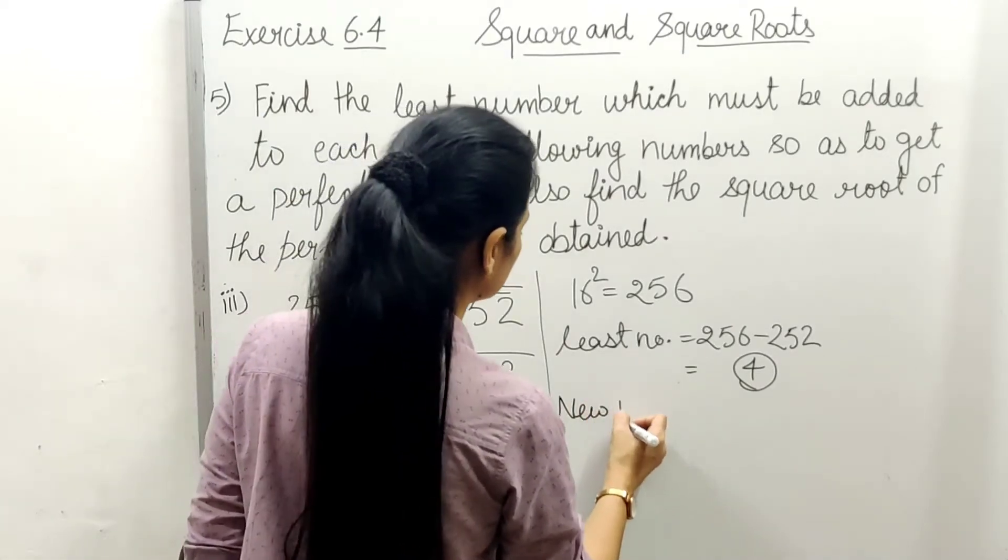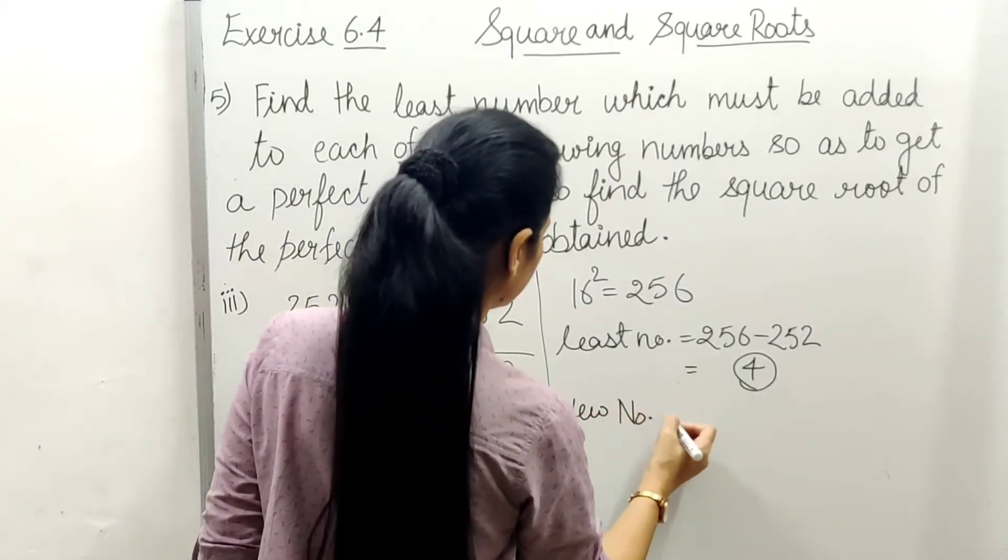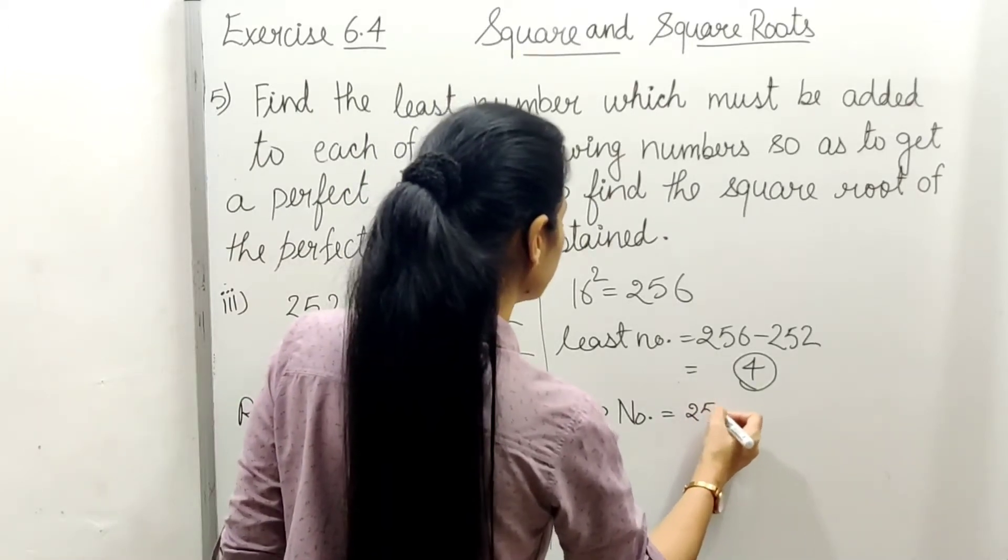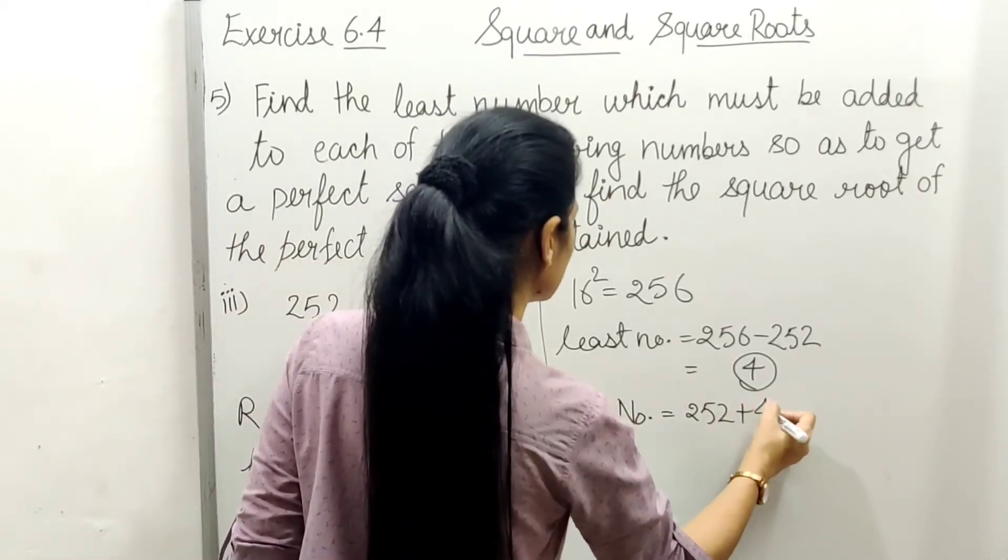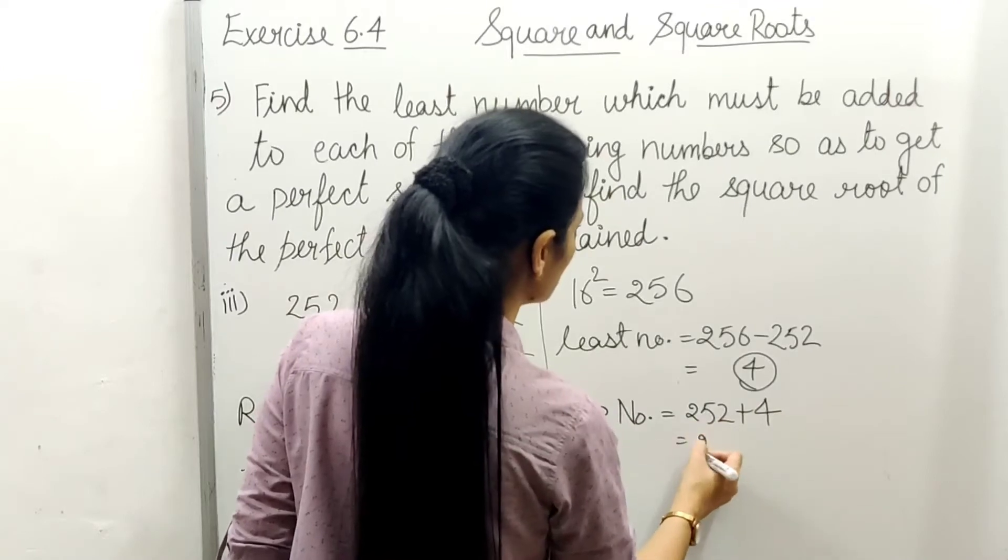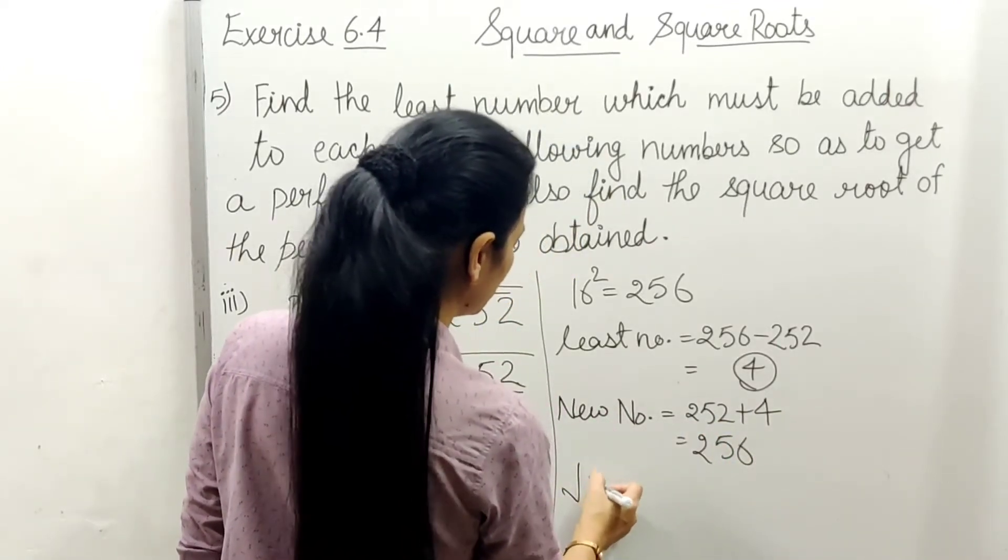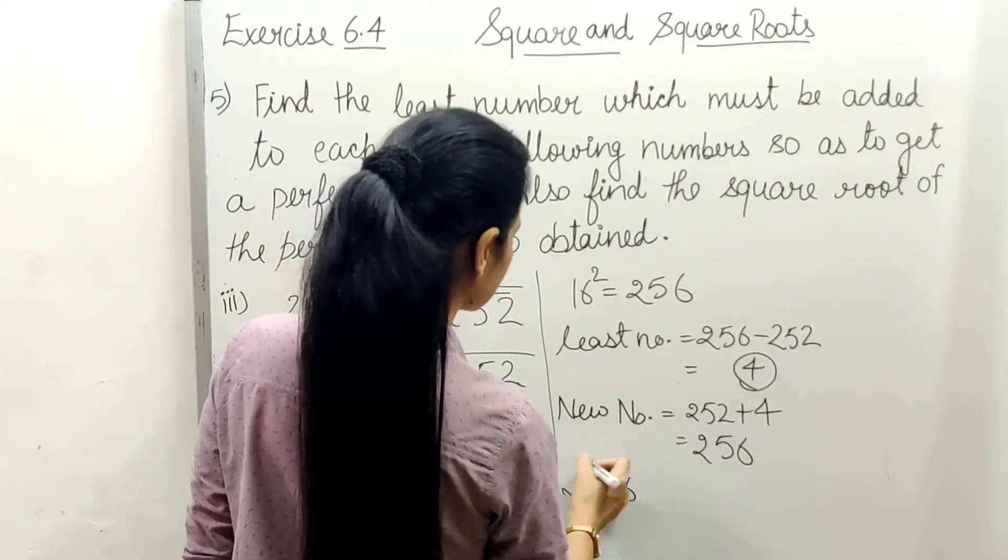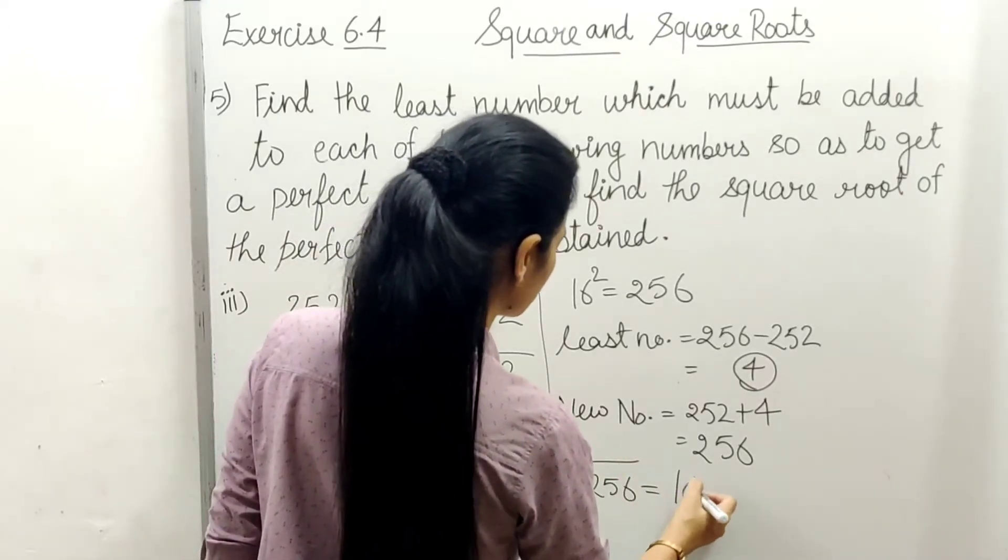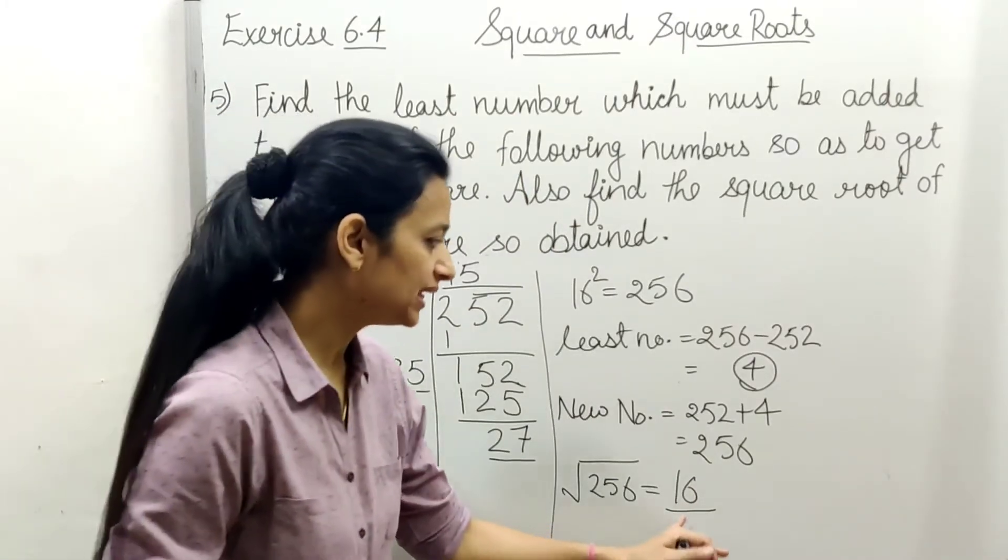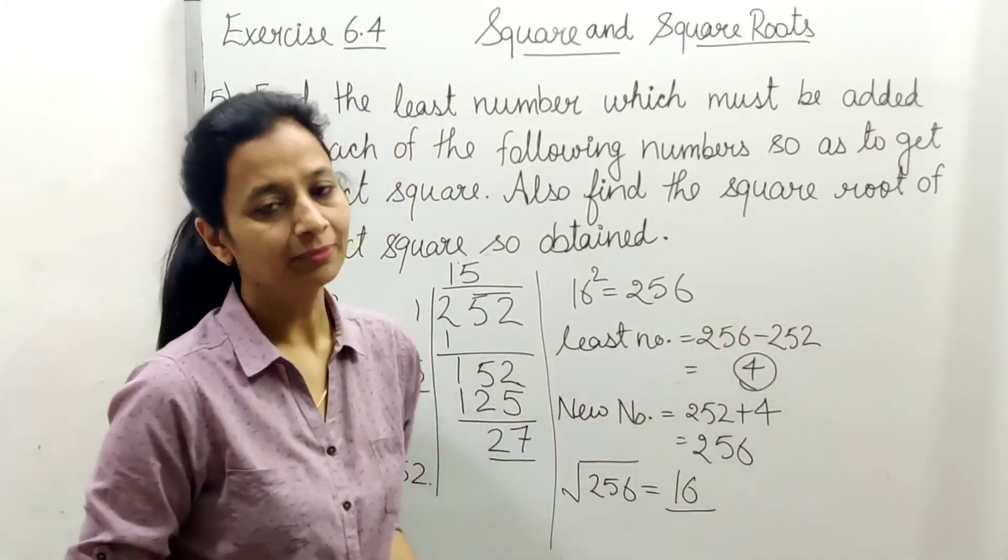And square root of 256 equals 16. So our answer is 16 and 4. I hope you understood this one too.